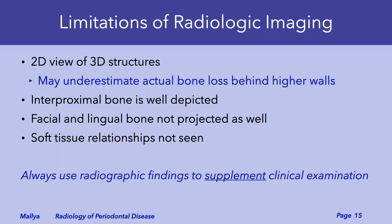There are certain limitations to radiological imaging of periodontal disease. First, projections such as periapicals, bitewings, and panoramic are two-dimensional in nature and can underestimate the bone loss. On these projections, the interproximal bone is well projected; however, the facial and the lingual bone is not projected as well.